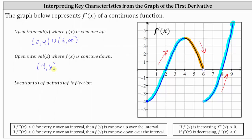Next, the points of inflection occur where the function changes from concave up to concave down, or from concave down to concave up. This would also be where the first derivative changes from increasing to decreasing, or from decreasing to increasing. Analyzing the graph of the derivative function, it changes from increasing to decreasing at x equals four, indicating a point of inflection at x equals four. The derivative function also changes from decreasing to increasing at x equals six, indicating another point of inflection at x equals six.